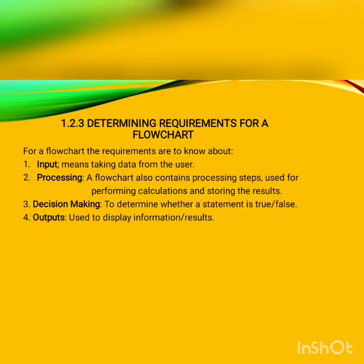Processing steps may include increasing or decreasing a value, adding, multiplying or dividing two values, etc. The third requirement is decision making, which is used to determine whether a statement is true or false and taking appropriate steps accordingly. The last requirement is output — outputs are used to display information, and usually this information exhibits the processed results.